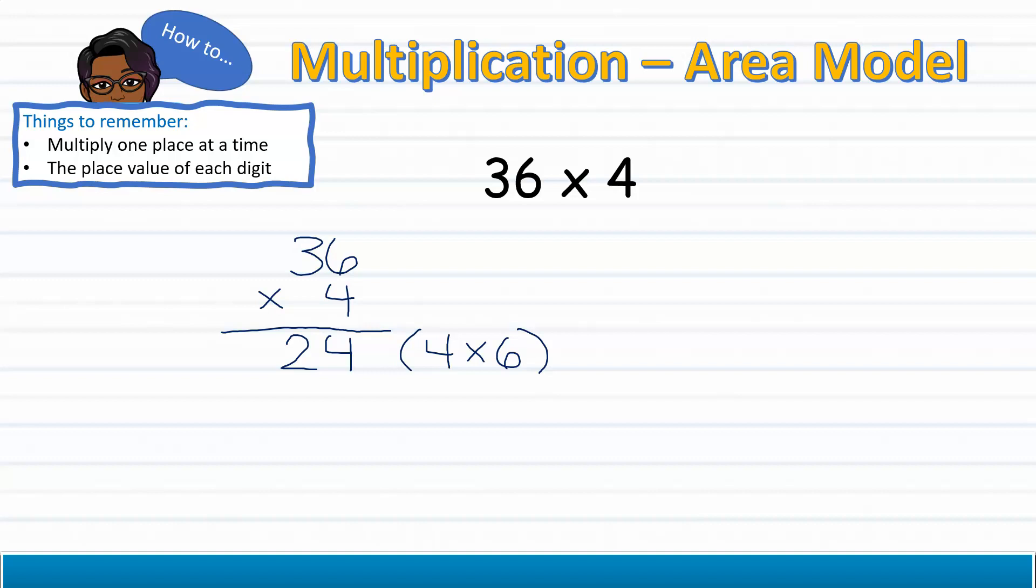Our product, 24, we write underneath the other numbers. We will do the same with the 3. It is important to remember that since the 3 is in the tens place, I am actually multiplying 4 times 30, which gives me 120. Now I am ready to add the partial products. And my total is 144. So then I know that 36 times 4 is 144.